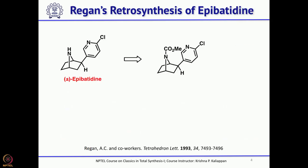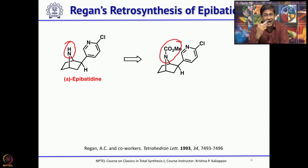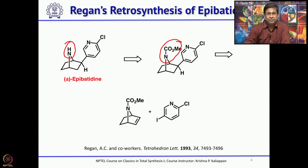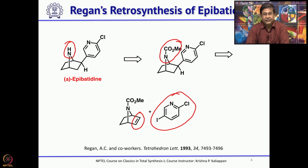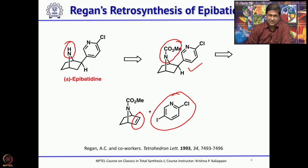From the retrosynthetic point of view, the NH should be protected first as a carbamate — that was the first retrosynthetic step, adding a functional group in the form of a protecting group. Then this intermediate can be obtained by a key reductive Heck coupling reaction. That means you have a double bond here, and a palladium-catalyzed reductive Heck coupling should give the key intermediate, which can be converted into epibatidine in one step.